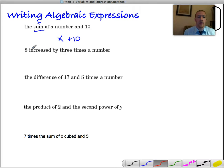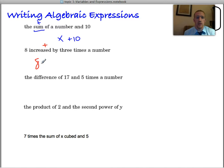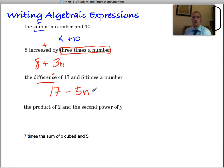8 increased by. Increased by is going to be adding. So 8 increased by 3 times a number. Alright. And by order of operations, 3 times a number has to stay together. So the difference of 17 and 5 times a number. So 17 difference is subtraction. So 17 minus 5 times a number. And you can use x and whatever variable you want.